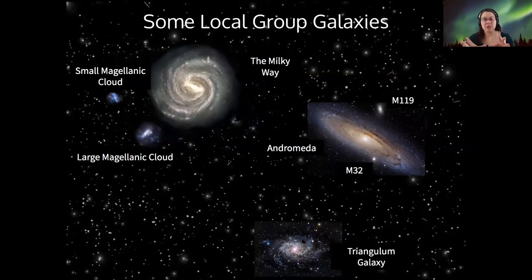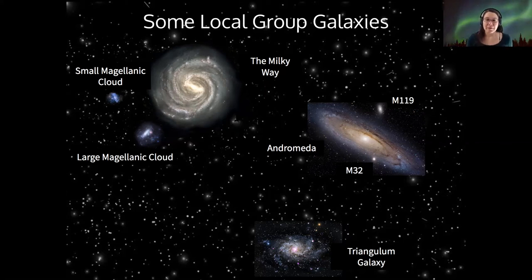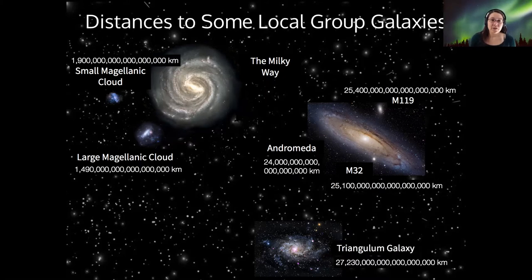So these are not arranged here in this photo to scale. The distances between these are actually much farther, as we'll see. And here are those distances to these local group galaxies expressed in kilometers. There's a lot of zeros out there, right?